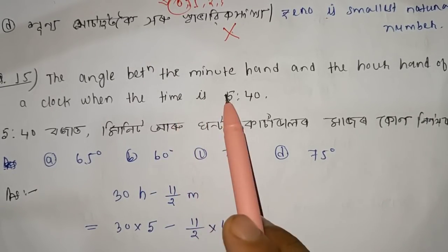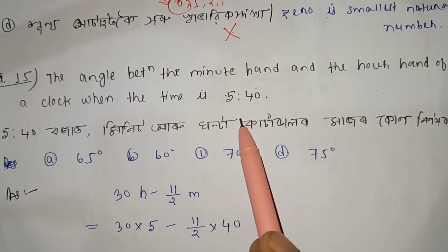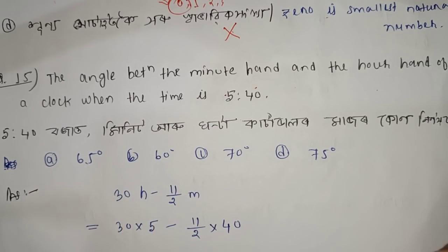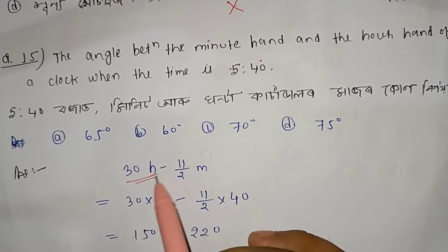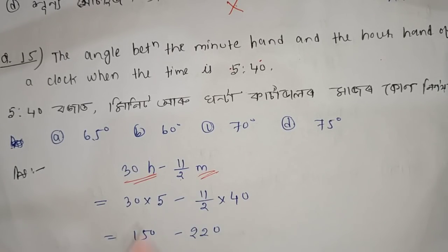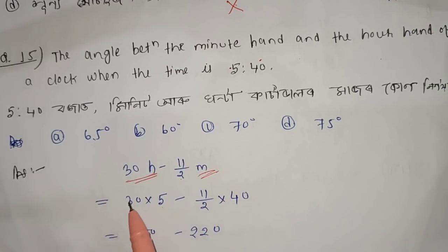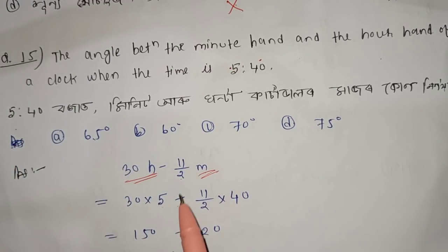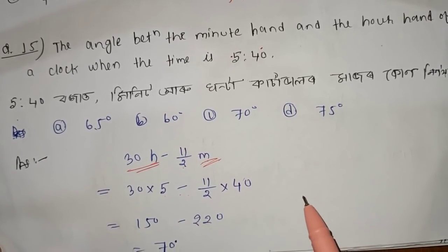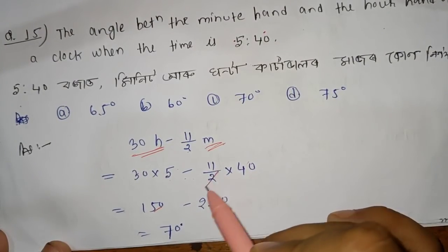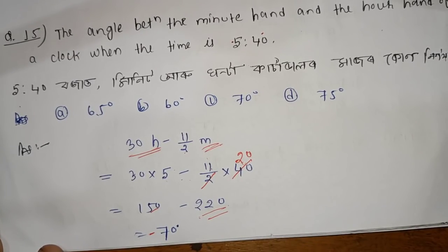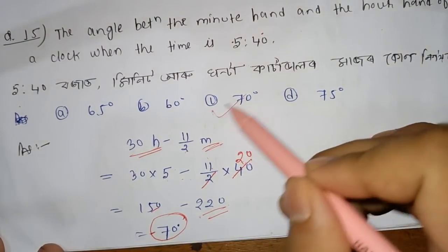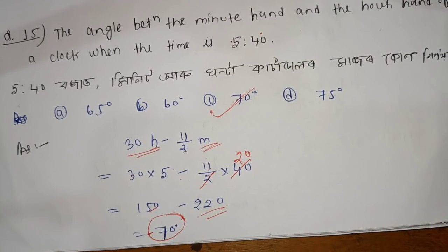The next question: find the angle between the minute hand and hour hand of a clock when the time is 5:40. The formula is 30H minus 11/2 times M, where H is the hour and M is the minutes. So 30 into 5 equals 150, and 11 into 40 divided by 2 equals 220. The difference is 220 minus 150 equals 70 degrees.